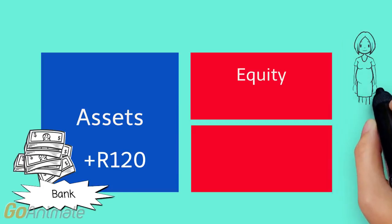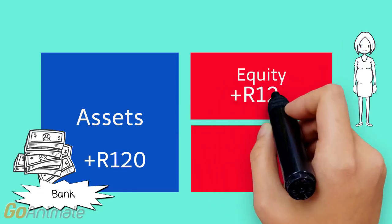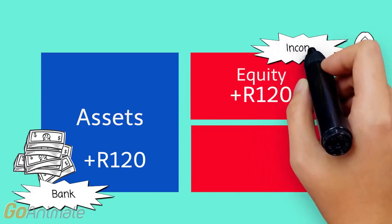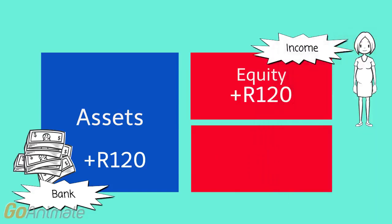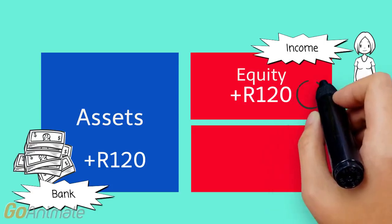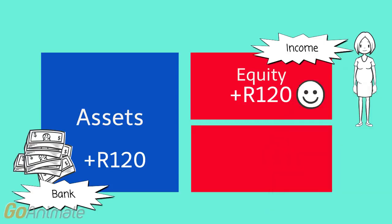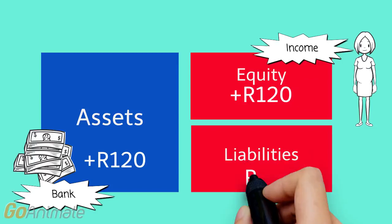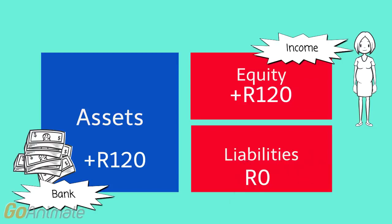The 120 rand she received from her first customer is income for her business. She earns income by mowing people's lawns, and income increases the equity of her business — so we give income a happy face. And in this case there's no effect on liabilities.